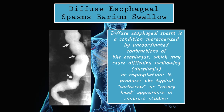Diffuse esophageal spasms on barium swallow: diffuse esophageal spasms are a condition characterized by uncoordinated contractions of the esophagus, which may cause dysphagia and regurgitation. It produces the typical corkscrew or rosary bead appearance on contrast studies. The muscular layer of the esophagus is spasming, and you can see this corkscrew or rosary bead pattern on the barium swallow.